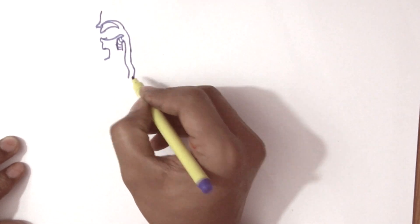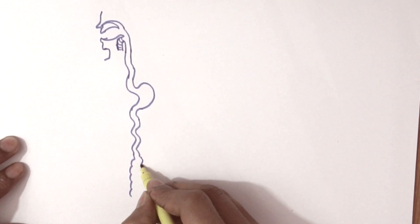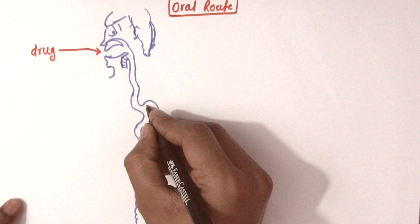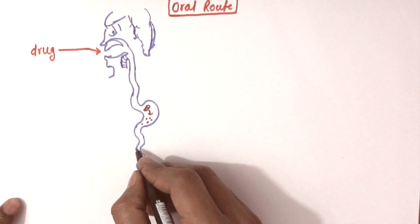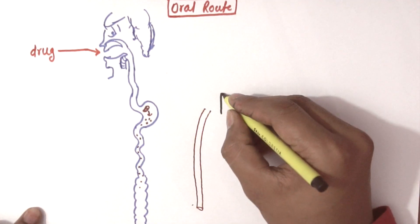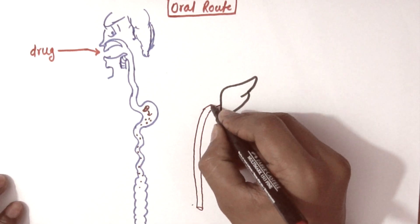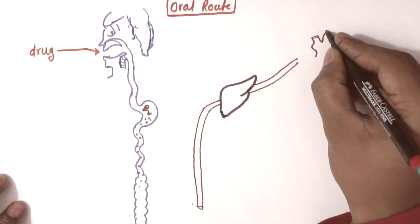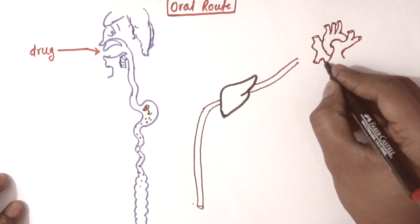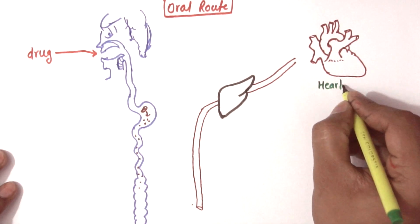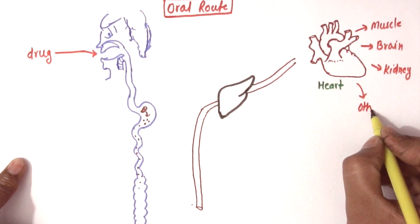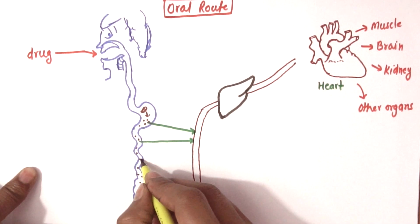Now we will discuss the oral route. Suppose this is a dynamic diagram of the GIT. When a drug is taken orally, it will go to the stomach and get disintegrated and dissolved into molecular form, from where it will get absorbed into the portal circulation. The hepatic portal circulation is a small circulation in which blood from the stomach, small intestine, colon, and upper part of the rectum goes to the liver instead of directly to the heart.